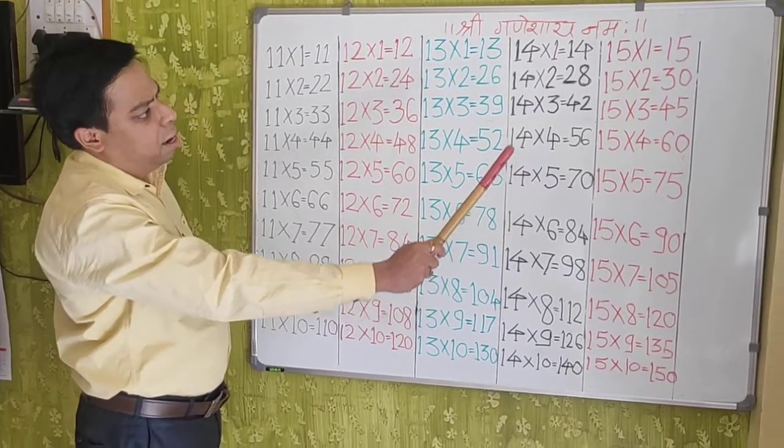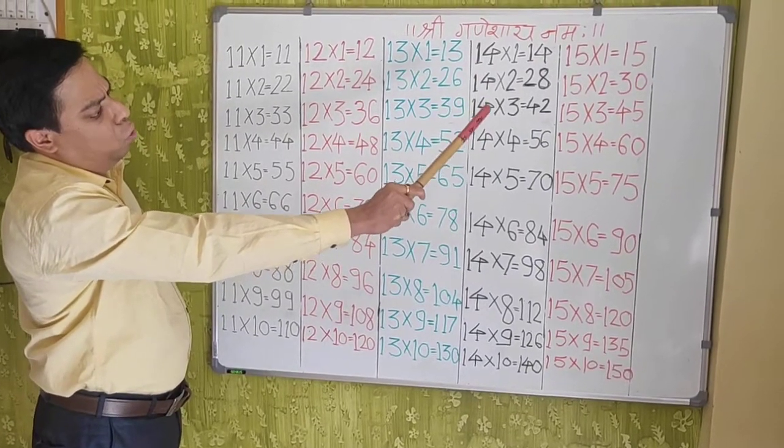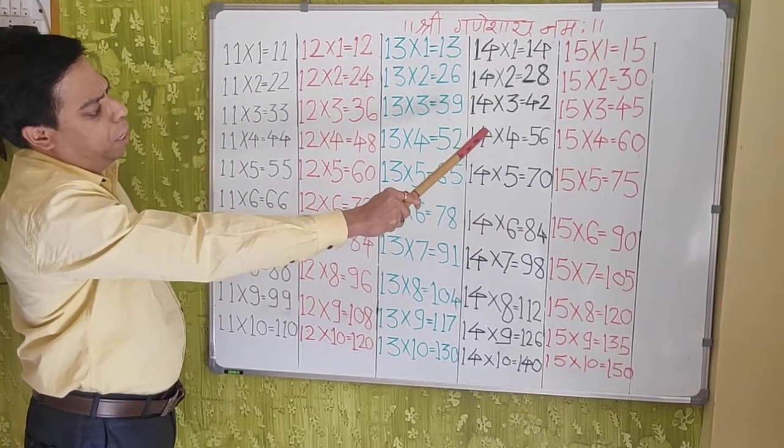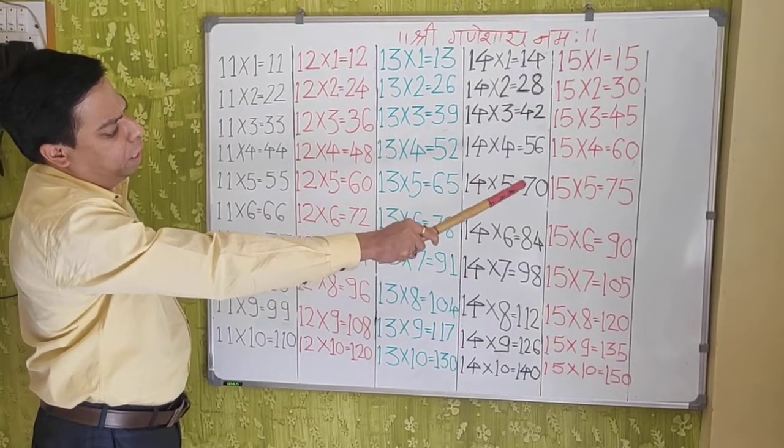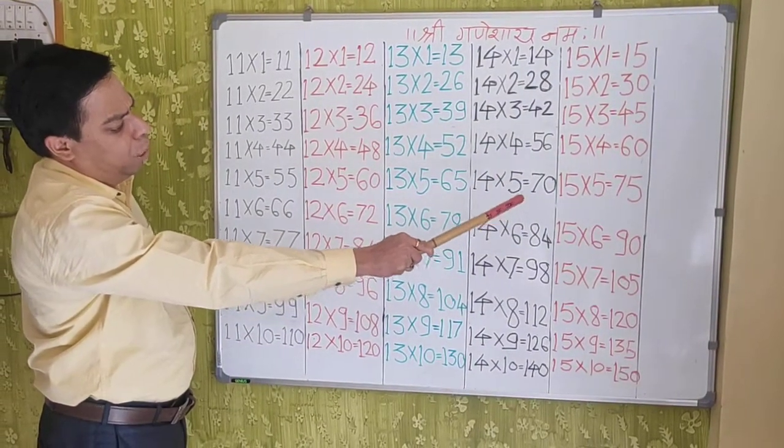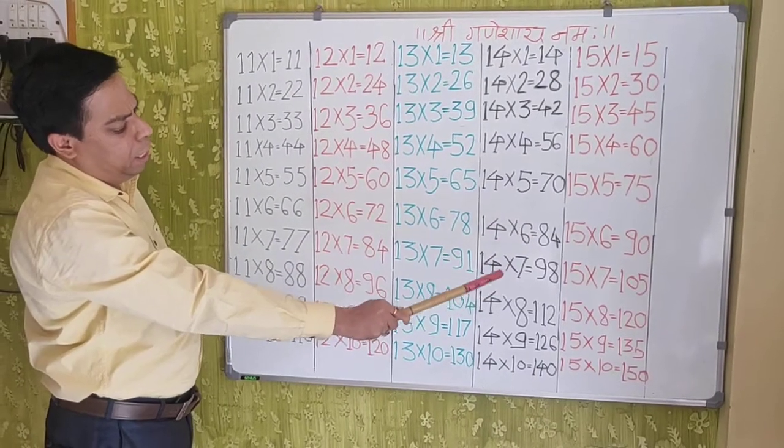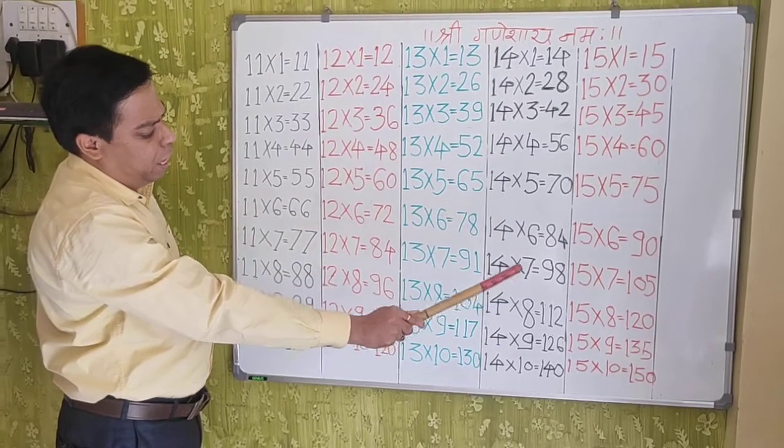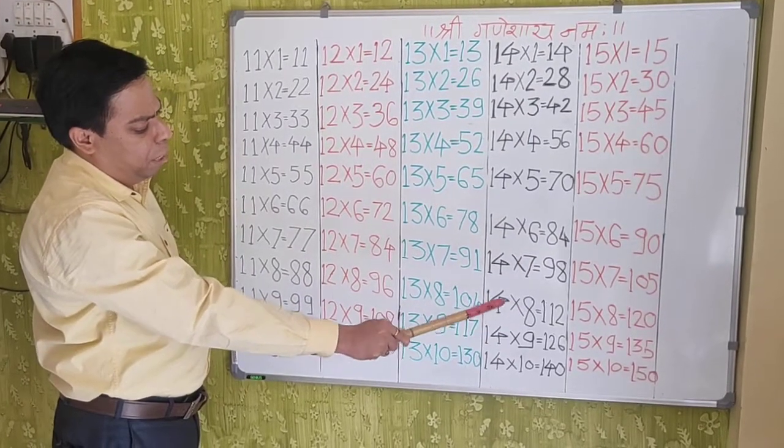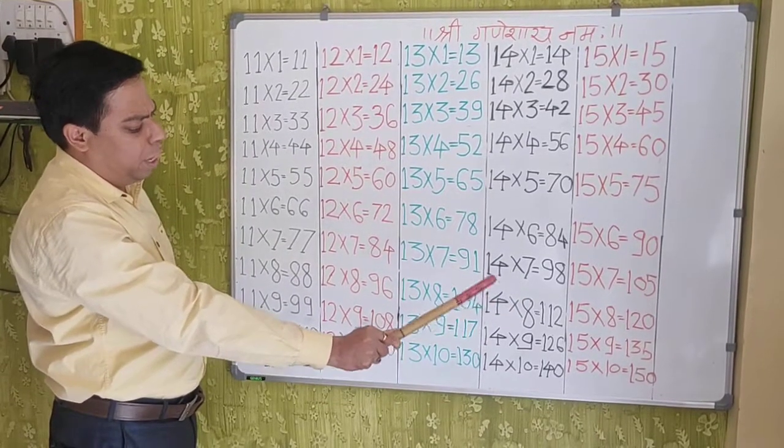Next table: 15×1=15, 15×2=30, 15×3=45, 15×4=60, 15×5=75, 15×6=90, 15×7=105, 15×8=120, 15×9=135, 15×10=150.